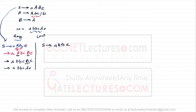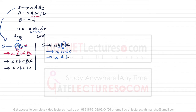For Left Most Derivation, given a production with two variables, we replace the left most variable first instead of the right most. So from S derives aABe, we replace the left most A first, giving aAde. Then we replace A with abc to get aabcde, and then replace B with d to get abbcde. In both cases you get the exact same string — the only difference is which variable you replace first.